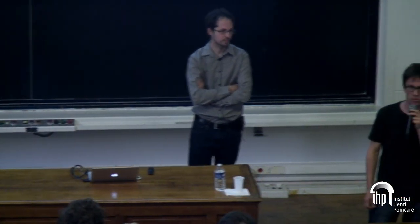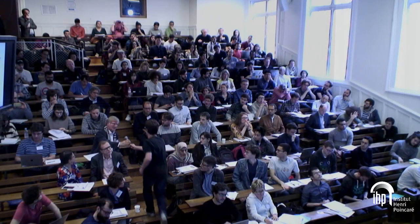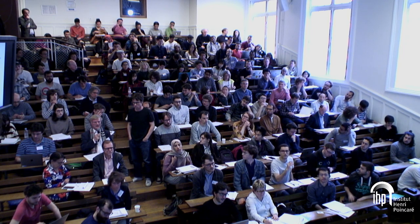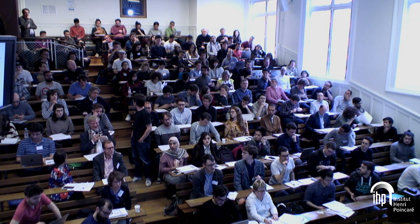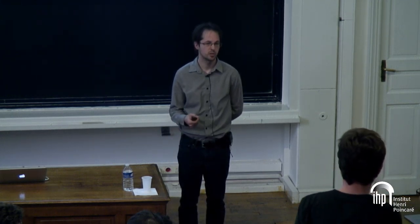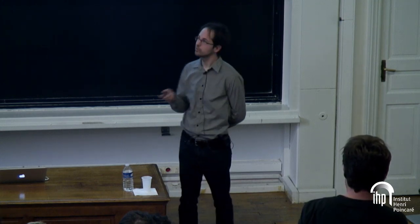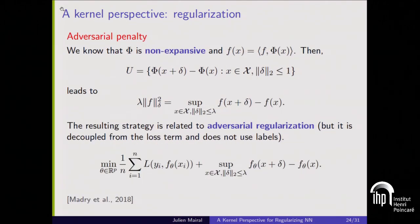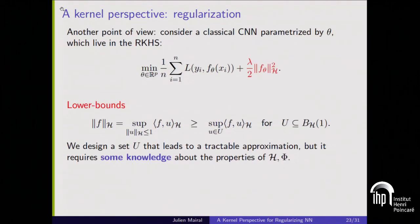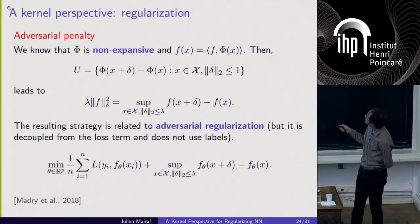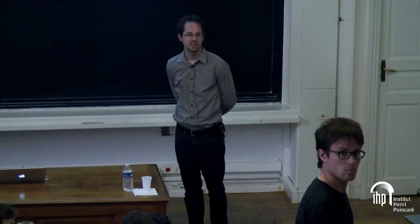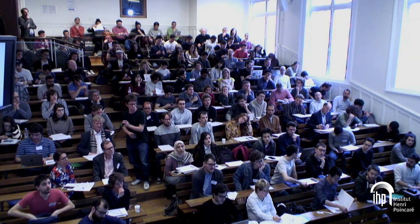Q: On the regularization term you added, there was a lambda parameter that seemed to disappear and be replaced by theta. A: Lambda is the regularization parameter, whereas theta are the weights of the network. Lambda was hidden here — when you use this lower bound, it will correspond to a specific position in the formulation. All of the bounds will have a regularization parameter; there is no parameter-free approach here.